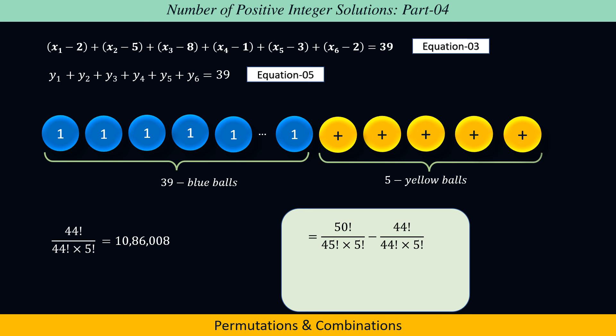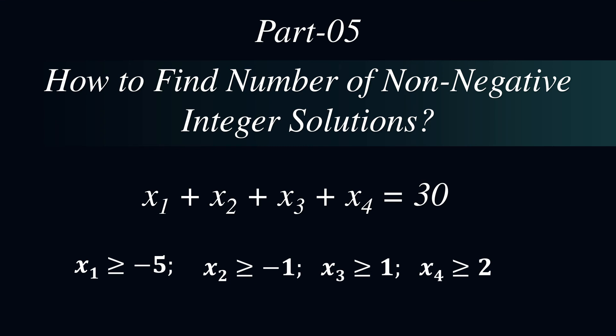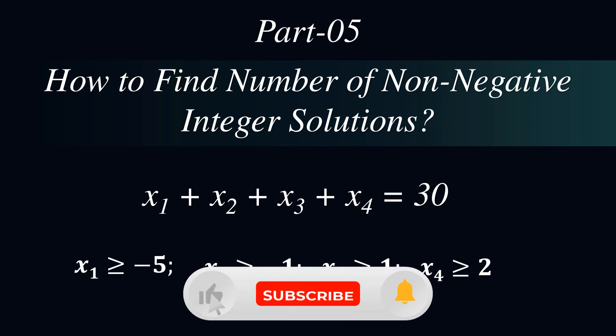After taking the difference of the number of non-negative integer solutions of equations 4 and 5, we get the number of non-negative integer solutions of the given equation, which comes out to be 10,32,752. In the next part of the series, we will learn how to find the number of non-negative integer solutions of a linear equation where x1 and x2 are greater than or equal to some negative integers. If you find the content of this video useful, consider subscribing to this channel. See you in the next video. Thanks.